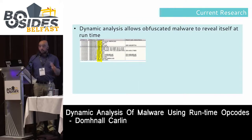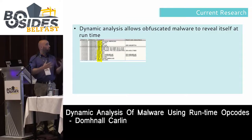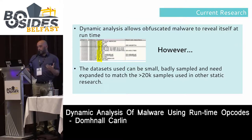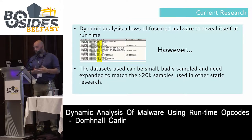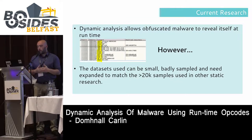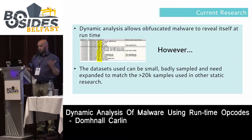Dynamic analysis, on the other hand, allows obfuscated malware to reveal itself at runtime — you get what should be the true code. However, the datasets used in the literature are small, sometimes as small as 70 samples. It doesn't quite stack up that a paper will say there are 40 million samples in the malware zoo and new samples every day, but then their methodology uses 90 samples and runs machine learning on it.